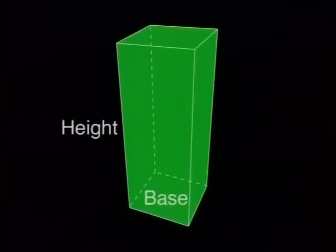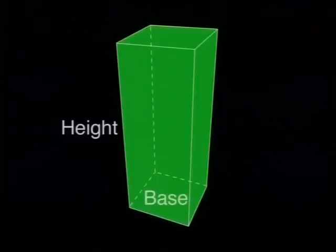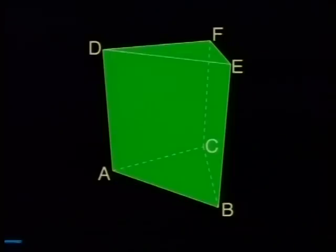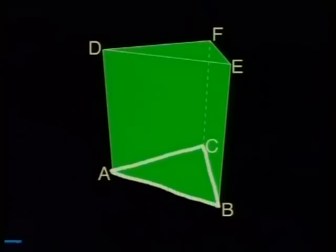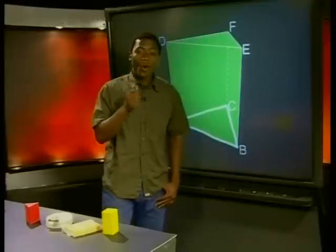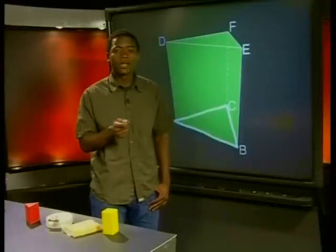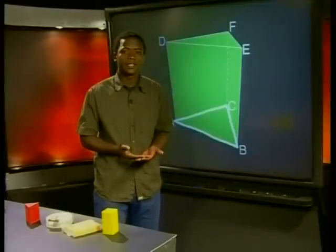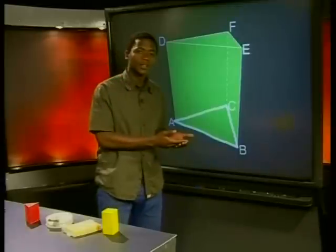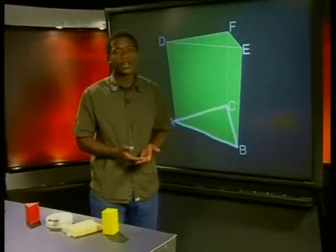To find the volume of a right rectangular prism, we multiply the area of the base by the height. That remains the same for all right prisms. But the base is no longer a rectangle, it is now a triangle. So all we need to do is change the formula for the area of the base from the formula for the area of a rectangle to the formula for the area of a triangle.